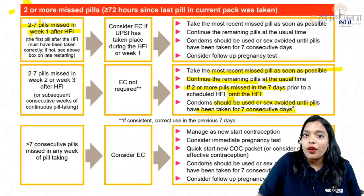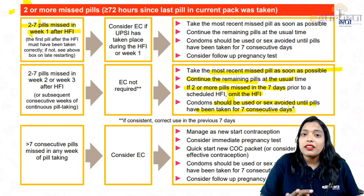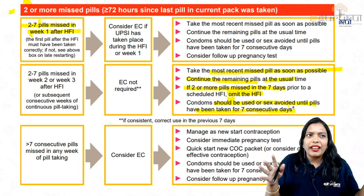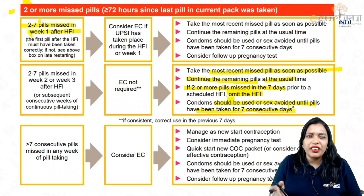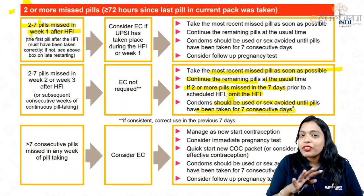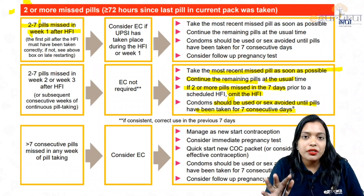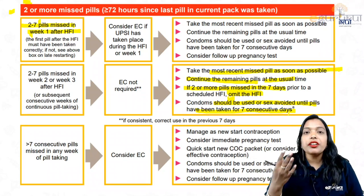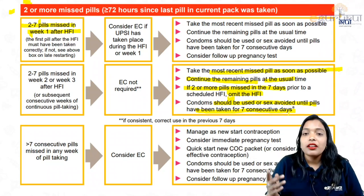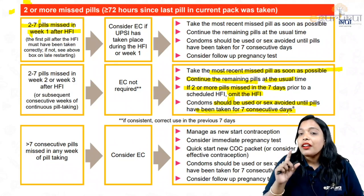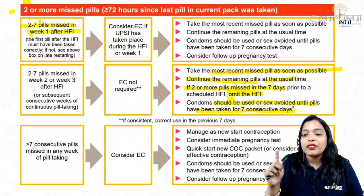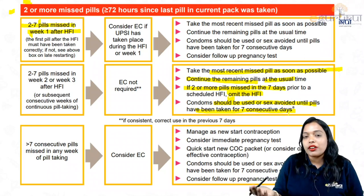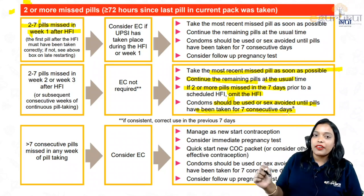So the question we had was that she missed four pills intermittently in week two and week three. Emergency contraception is not required. Take the pill as soon as she remembers. Continue the remaining pills. Omit the hormone-free interval. If she had unprotected intercourse, use a condom or additional contraception for the next seven days.